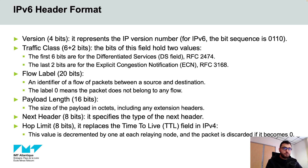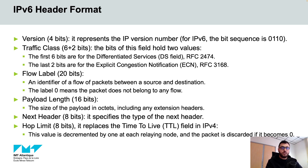The 8-bit hop limit field replaces the time-to-live field in IPv4 and represents the maximum number of routers the IPv6 packet can pass through. This value is decremented by one at each forwarding node and the packet is discarded if it becomes 0.